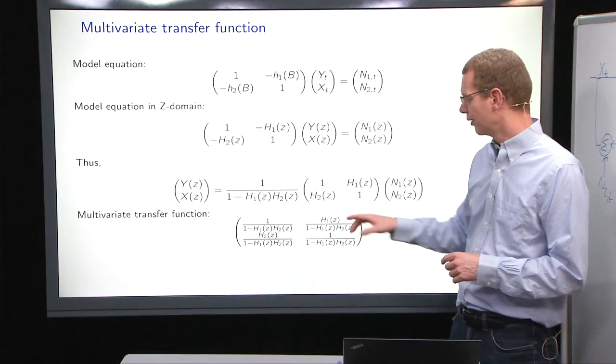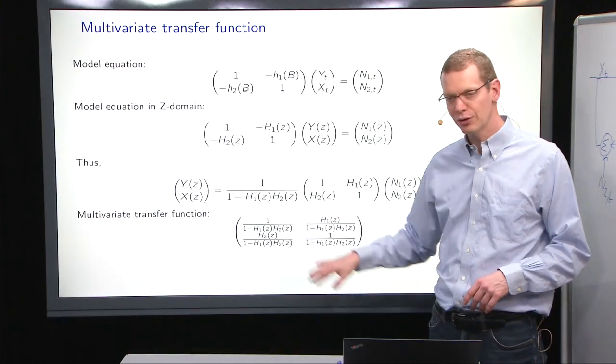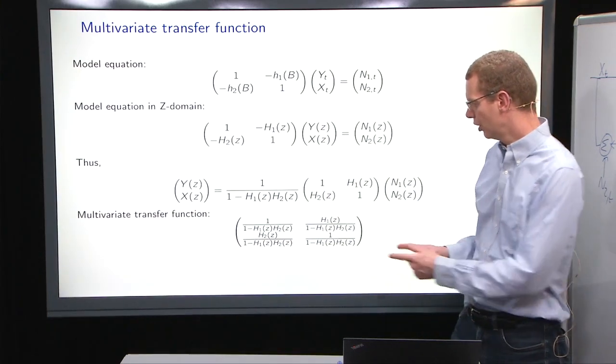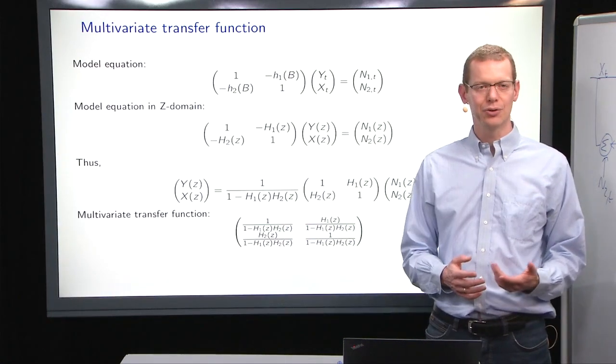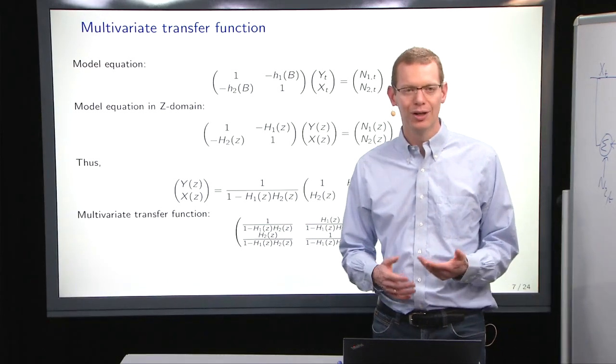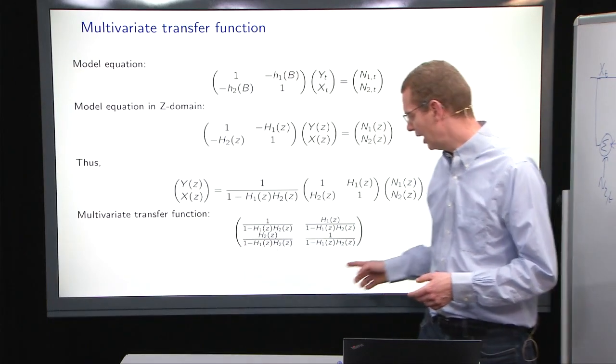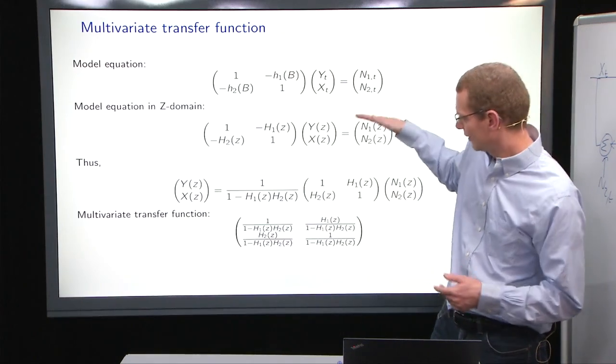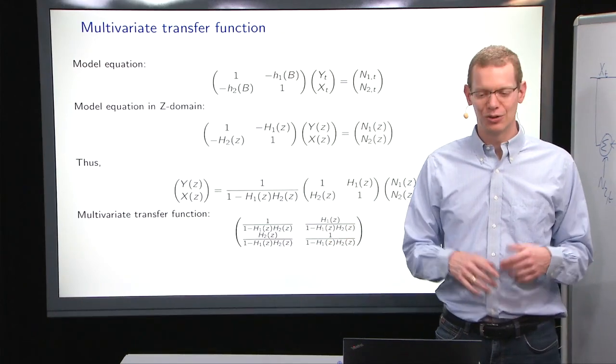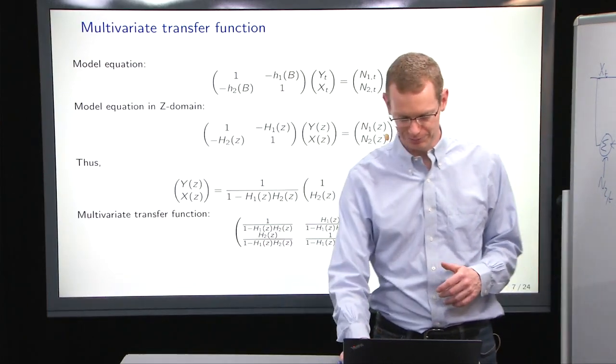So what we have here is basically done all the things that we did on the previous two slides in just one slide. And if we multiply the 1 over determinant inside, then we get all these transfer functions. What we got before was what's in the rows. That was what we got out when we did it one by one. But I hope you agree with me that it's nicer to have it in a multivariate setting, it's to some extent easier to handle as well, and it's clear to see what the structure is and where the structure comes from.